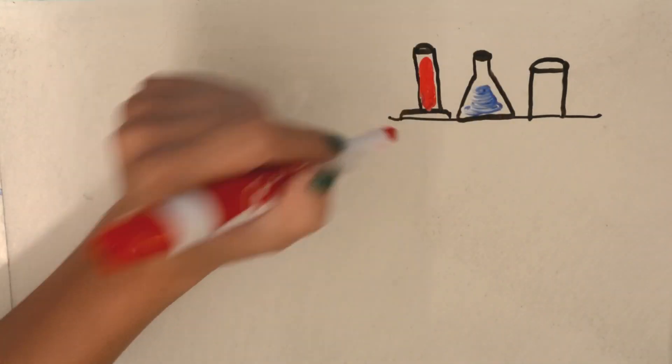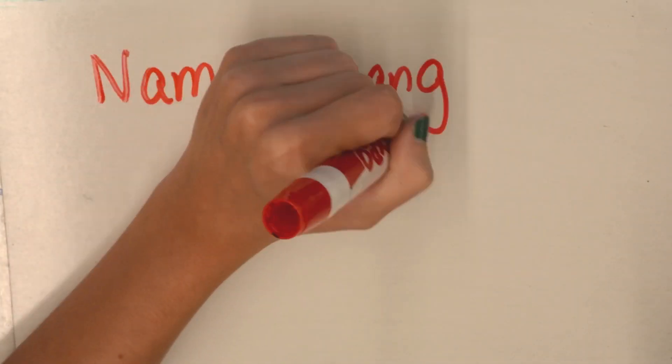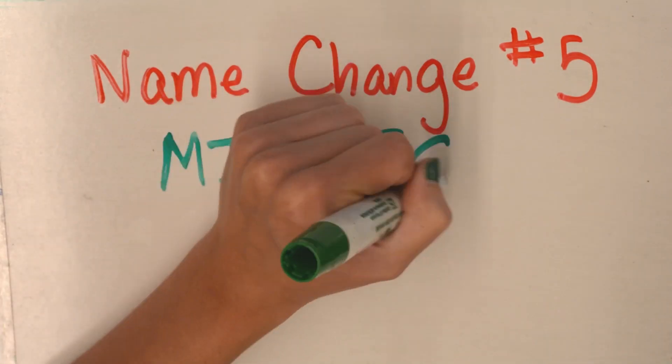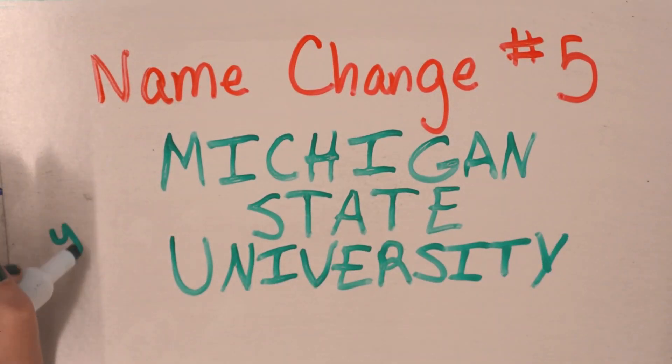The National Superconducting Cyclotron was established in 1963. More on that later. Just before the Beatles came to America, we finally made it to the name of Michigan State University on January 1, 1964.